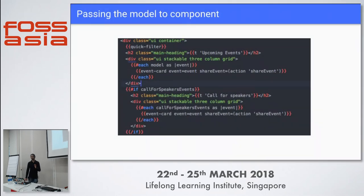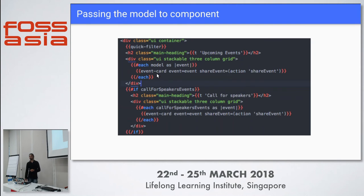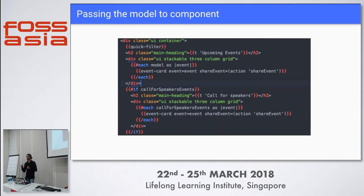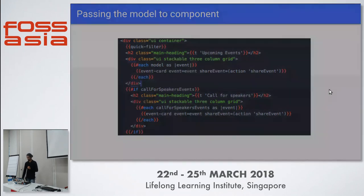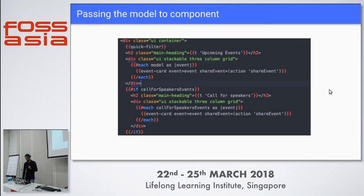When we have the data in our route or controller, we pass it to the component. Here, event card is a component and we are passing the data to it. We loop through all the events and pass the data to the component. The component is the last part of this cycle — everything is shown on the application by the components.